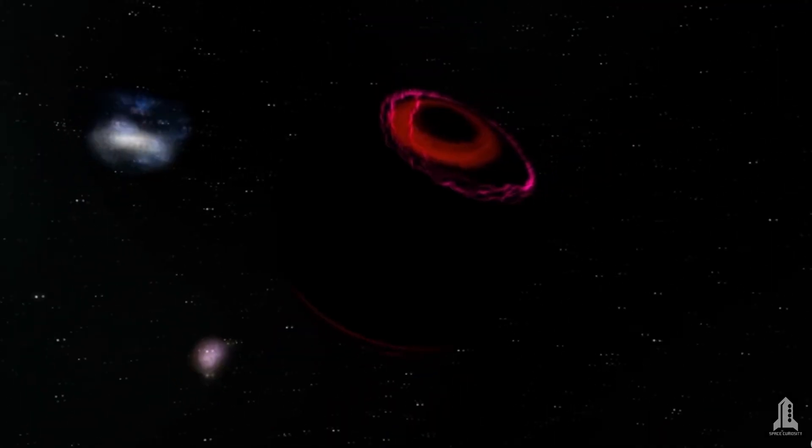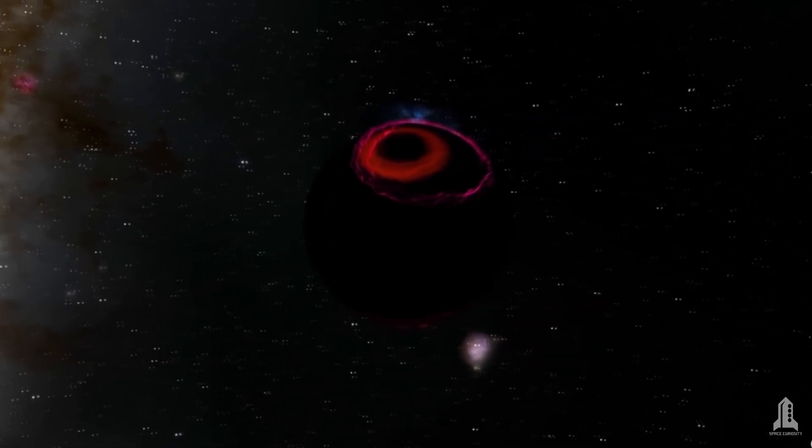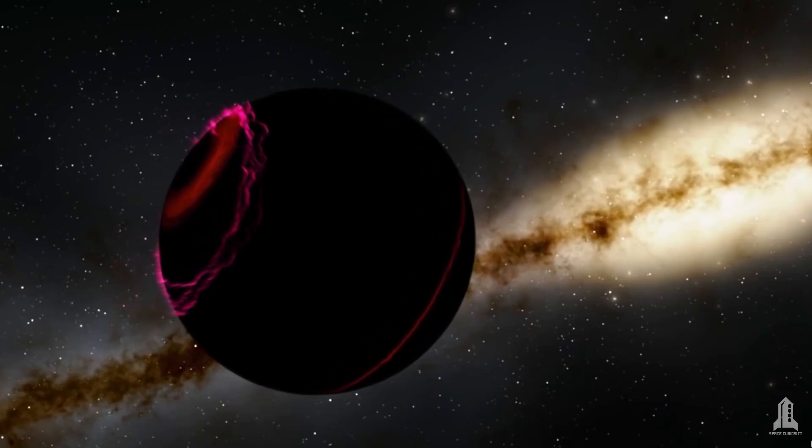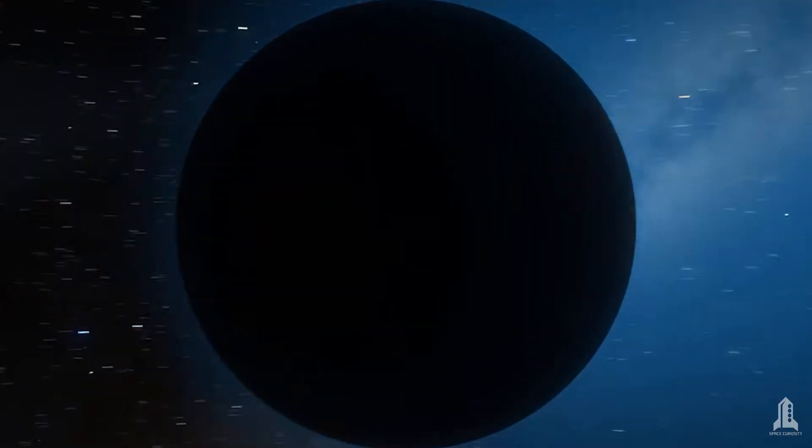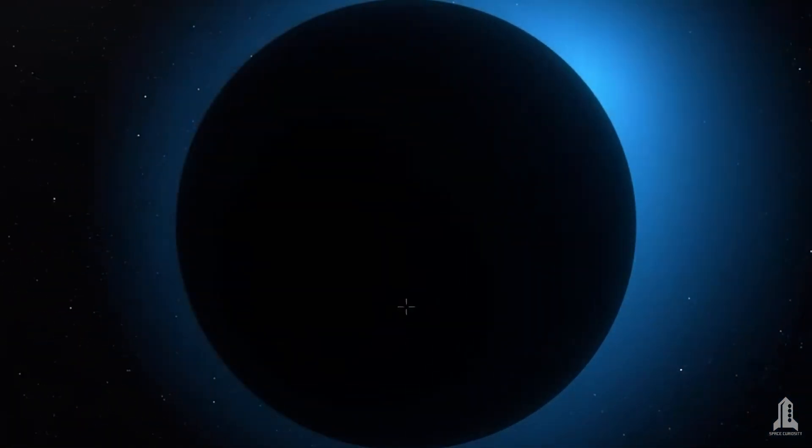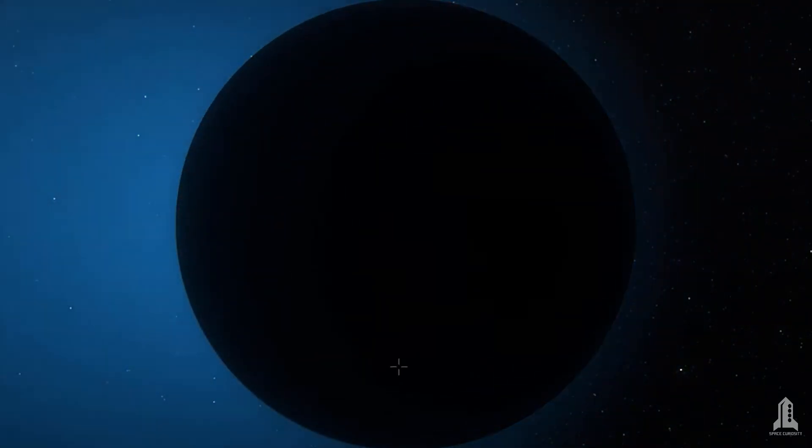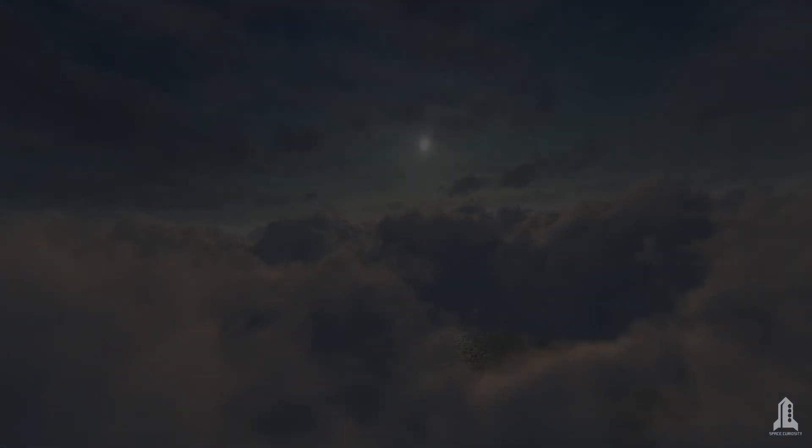But its most surprising feature is its ability to absorb almost all the light it receives. With an albedo of only 0.04, Wasp 12b is darker than asphalt. This means it absorbs over 94% of the visible light that hits it, making it one of the darkest objects in the known universe. If you were inside its atmosphere, you wouldn't be able to see anything, not even your hands, even during the day.